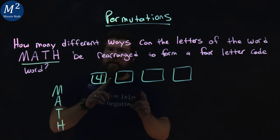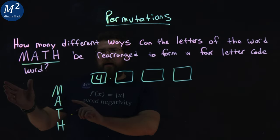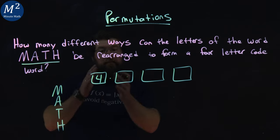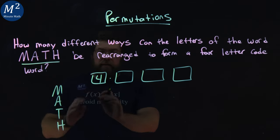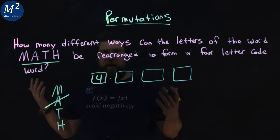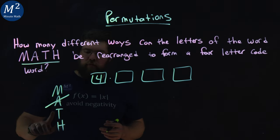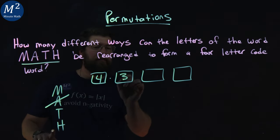But then the second letter, we cannot repeat a letter. We only have four options. After the first letter, one option is eliminated. Let's say A in this case. We then have three letters to choose from for the next one.